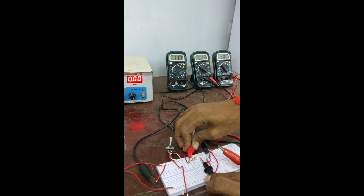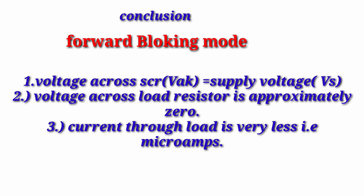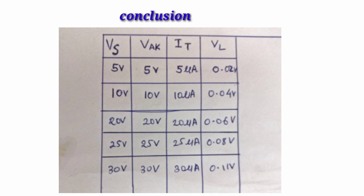Now we will go to 30 volts, which is the maximum. We are seeing 30 volts and 30 microamperes of current. The conclusion we got is: the voltage across the SCR equals the supply voltage, the voltage across the load resistance is approximately 0, and the current through the load is very low in microamperes — because the SCR is in blocking mode.